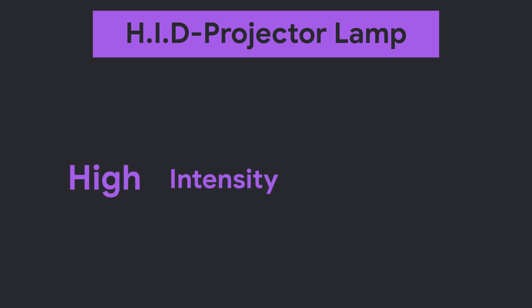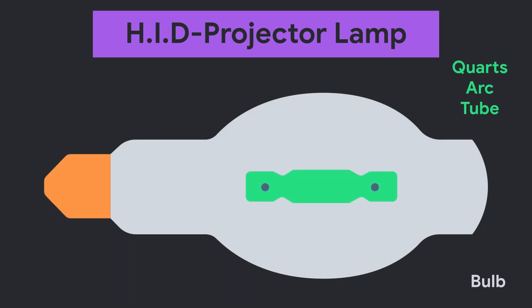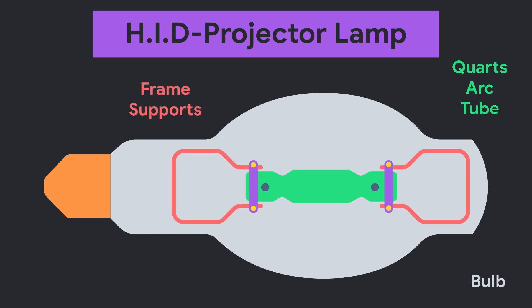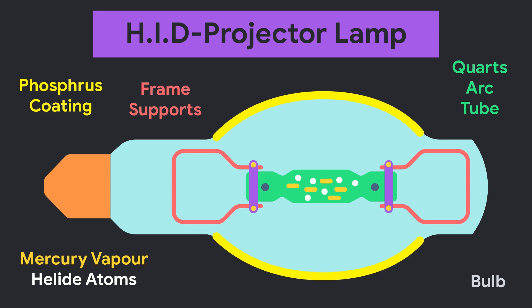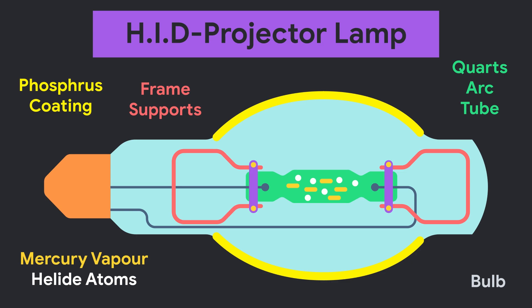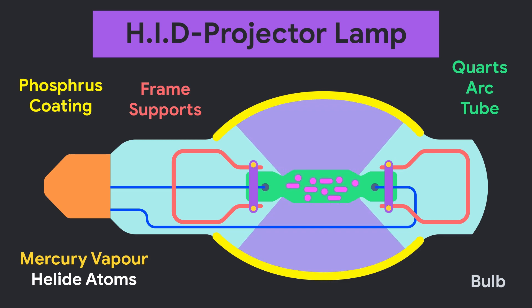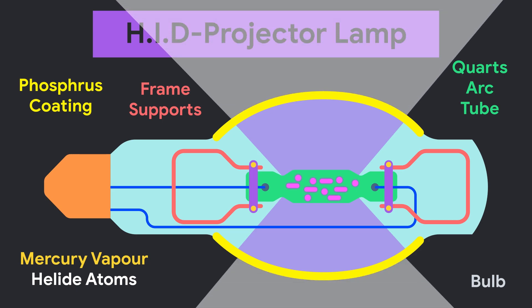The high intensity discharge lamp is also known as a projector lamp. It contains a quartz arc tube which is held inside a glass bulb with the help of supports. The arc tube contains mercury vapor and halide atoms, while the bulb is filled with a mixture of gases like argon and sodium, with an inside coating of fluorescent material. The arc tube is connected with tungsten electrodes which end at the connector of the bulb to supply electricity. When the lamp is subjected to electric current, current flows through the arc tube via electrodes, which excites the halide atoms. Due to the presence of mercury vapor, it emits ultraviolet rays, and the fluorescent coating converts these to visible bright light by reducing frequency and intensity.